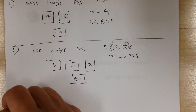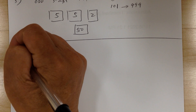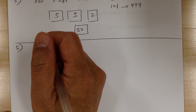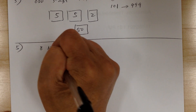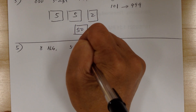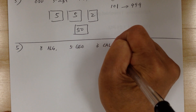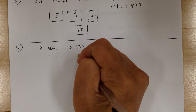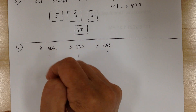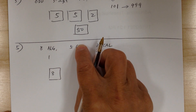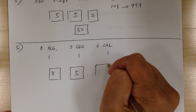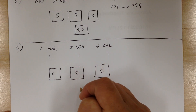Number five: how many ways can you select one algebra book, one geometry book, and one calculus book from a collection? You have eight algebra books, five geometry books, and three calculus books. You choose one from each group: eight choices for algebra, five choices for geometry, and three choices for calculus. Multiply them together: eight times five times three gives you 120.